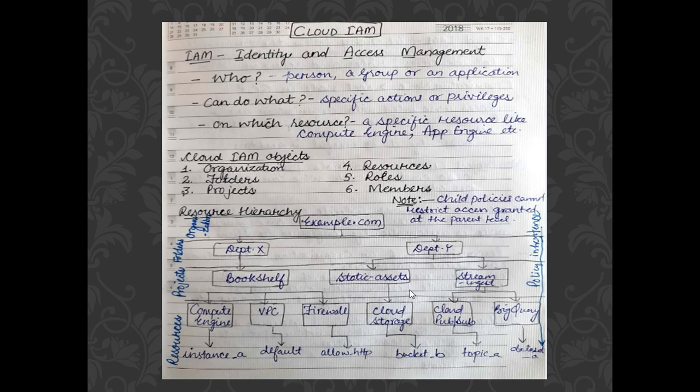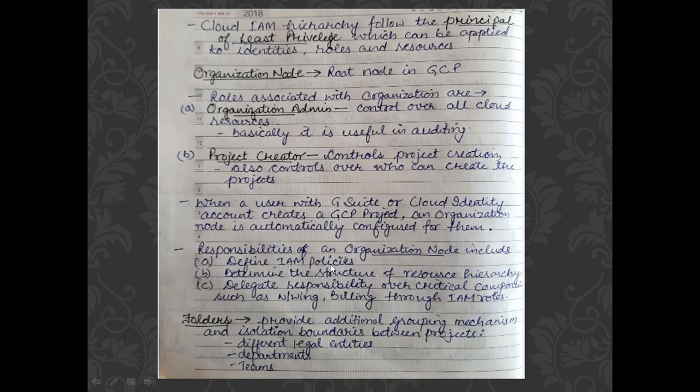From this resource hierarchy, the top node is the organization node, followed by folders, then projects, and then resources. The key idea in Cloud IAM is that if the organization node has any policies imposed on it, those policies will be inherited by the child nodes too. If Department X is provided the editor role and Bookshelf project is only provided the viewer role, since Bookshelf is the child of Department X, the editor role from the parent will also be provided to Bookshelf.